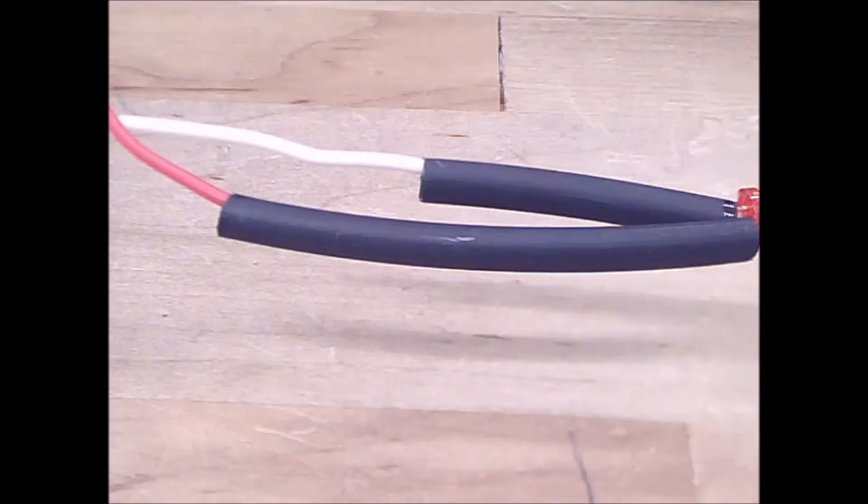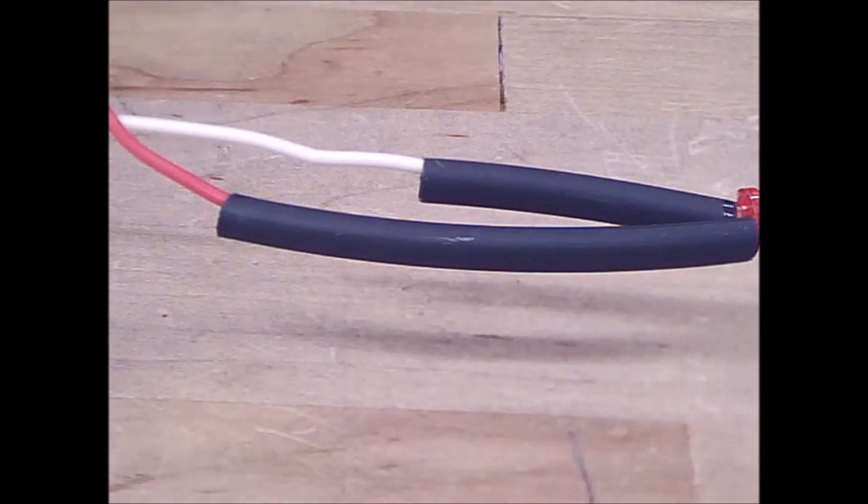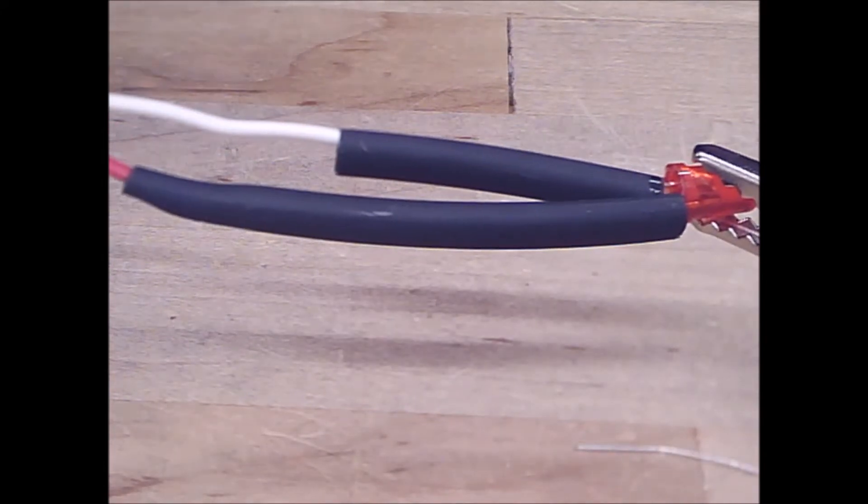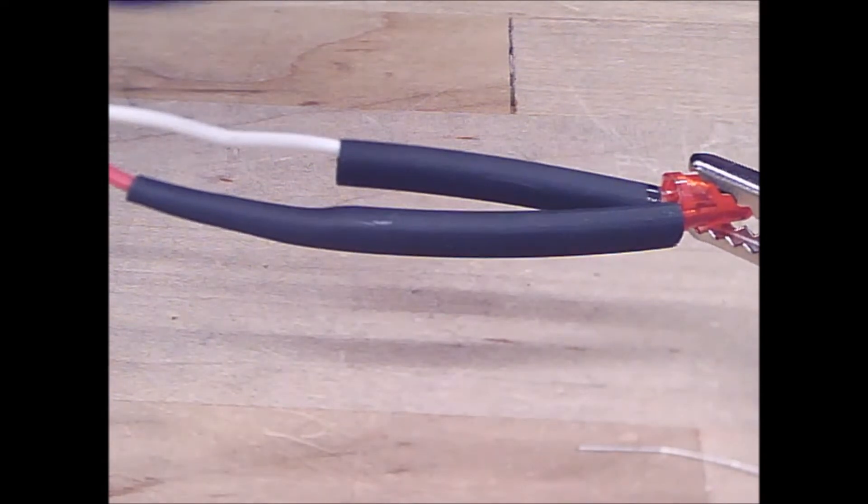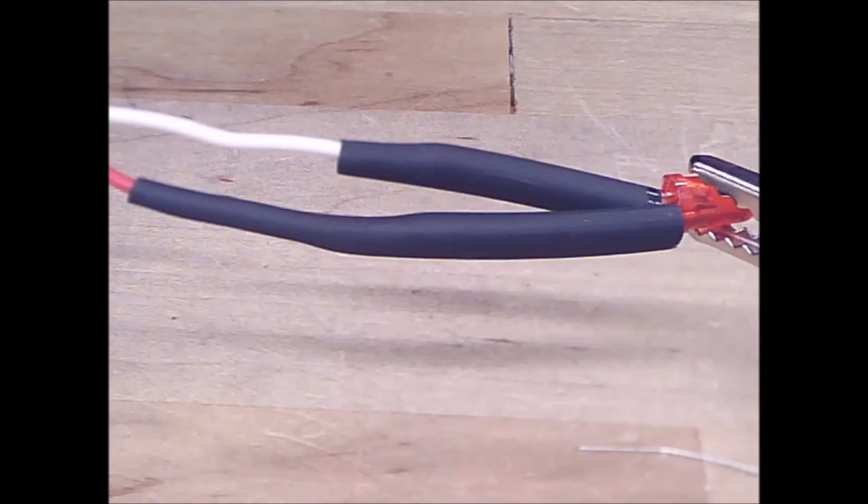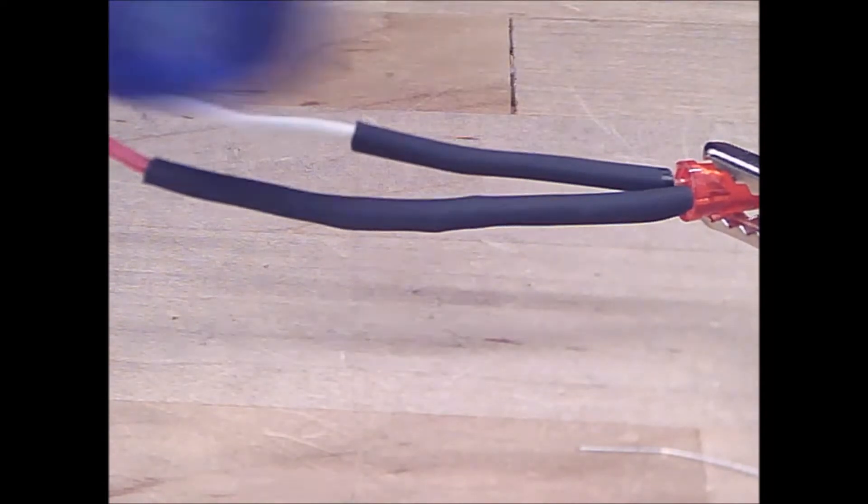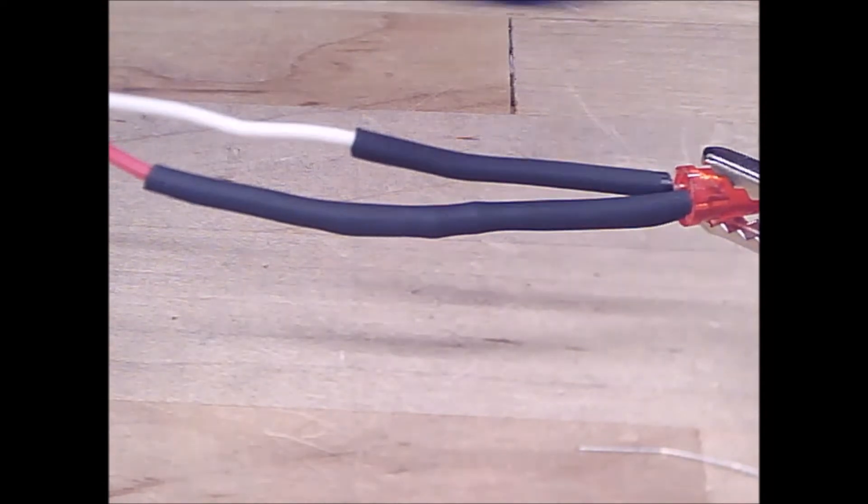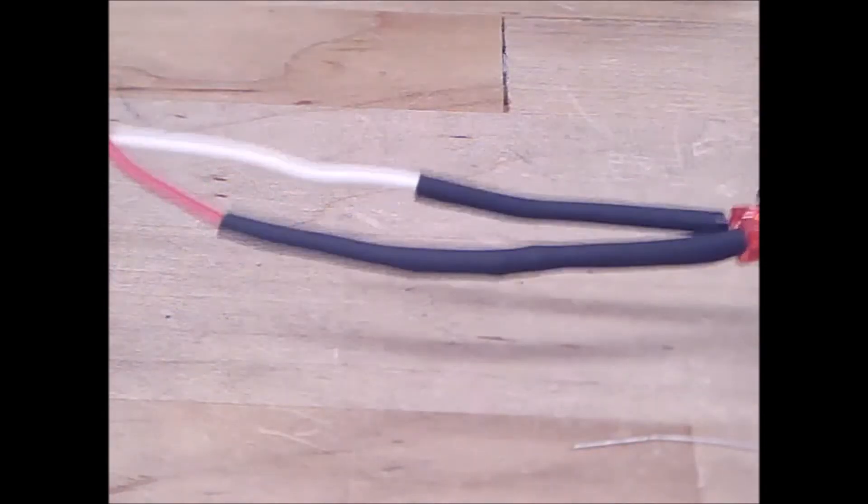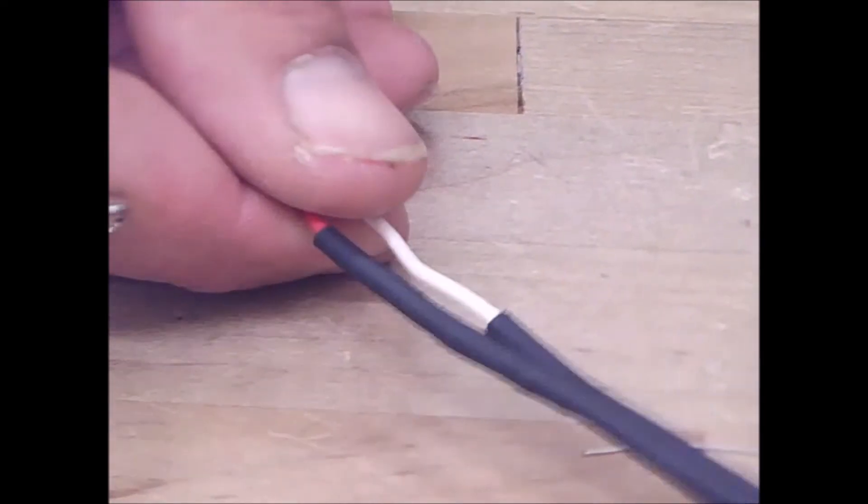Simply turn on a heat gun and direct it at the LED. You can see it's shrinking. Okay. And we unclip.